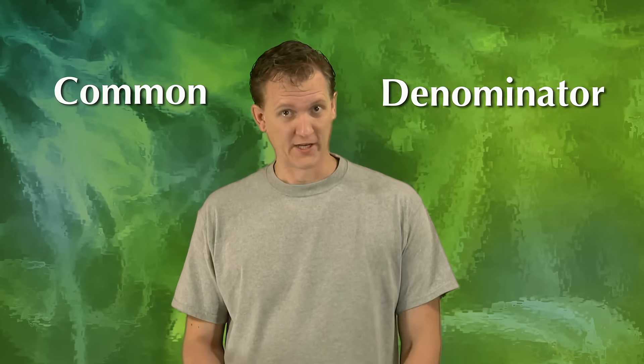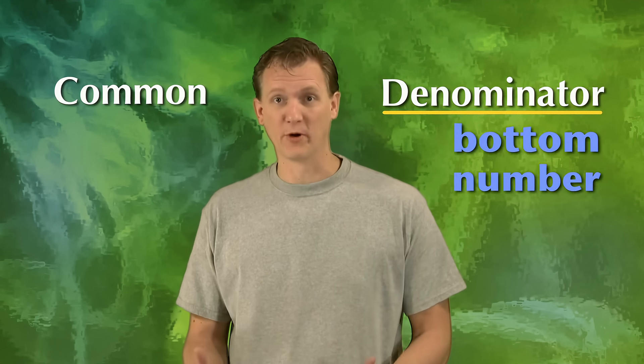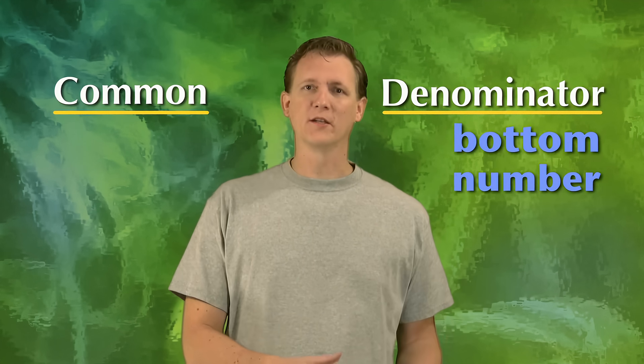In math language, that's called finding a common denominator. Now remember that a denominator is just a fancy math word for the bottom number of a fraction. And common just means that they're the same. So, how do we find a common denominator so that we can add or subtract unlike fractions?